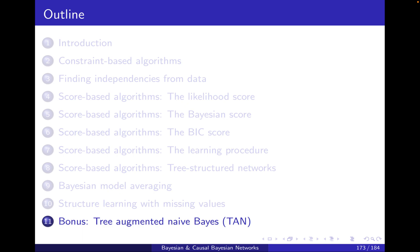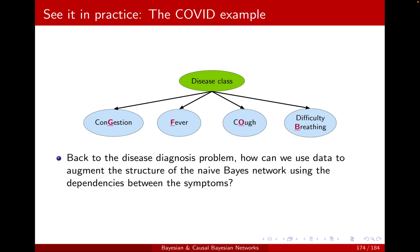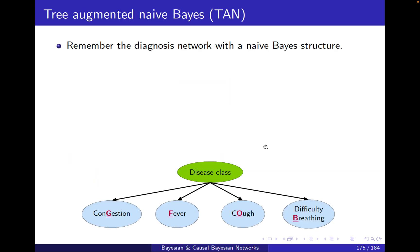Hello and welcome to section 11, the bonus section: Tree-Augmented Naive Bayes, or TAN. Back to the disease diagnosis problem — how can we use data to augment the structure of the Naive Bayes network using dependencies between the symptoms?